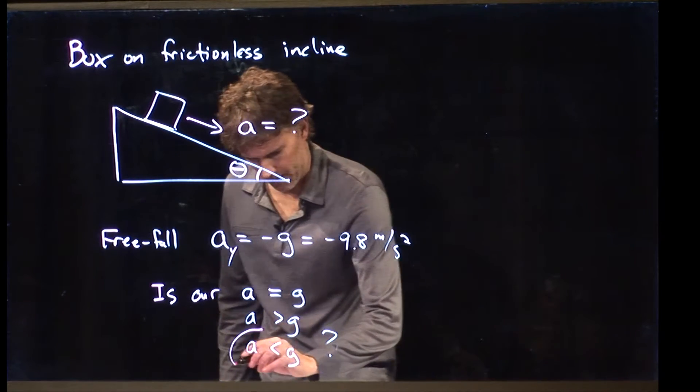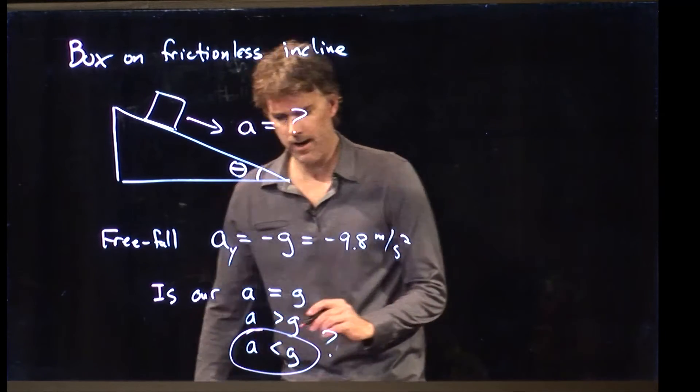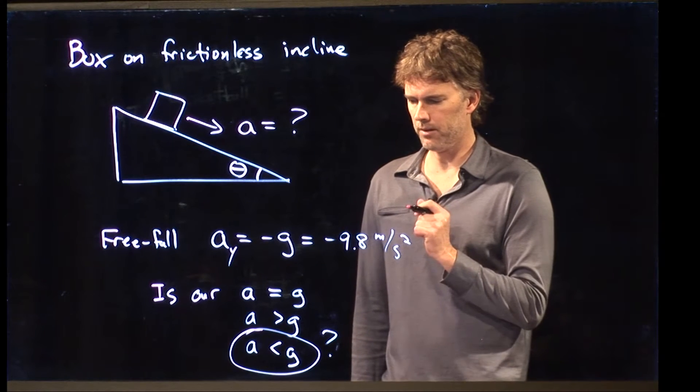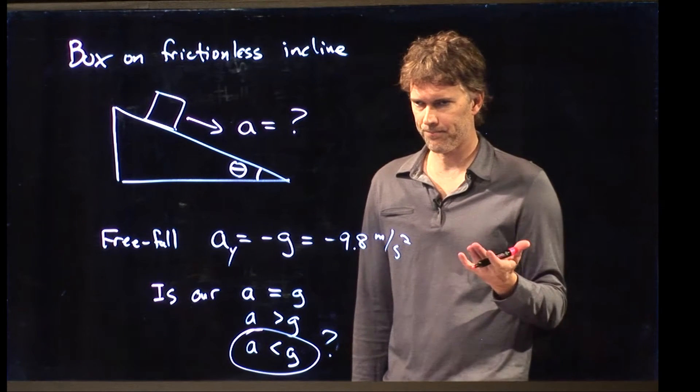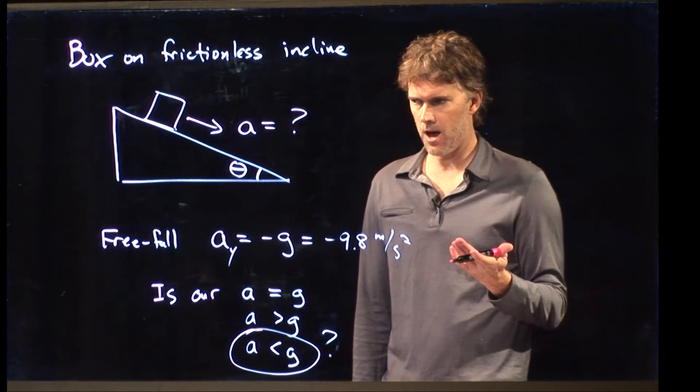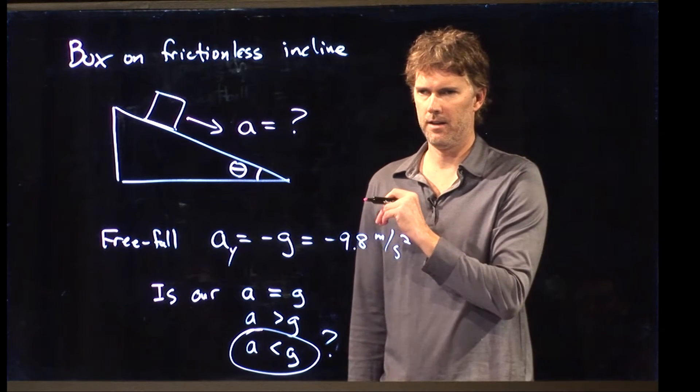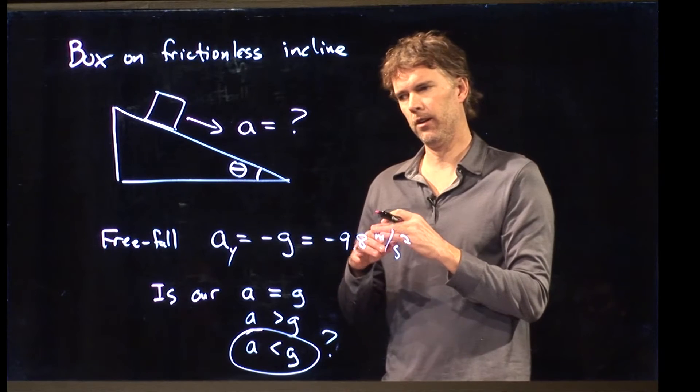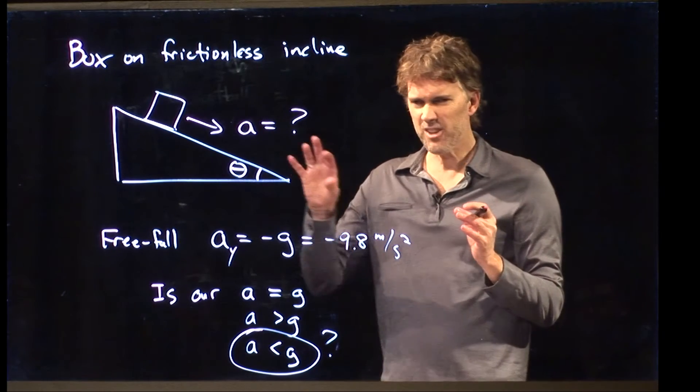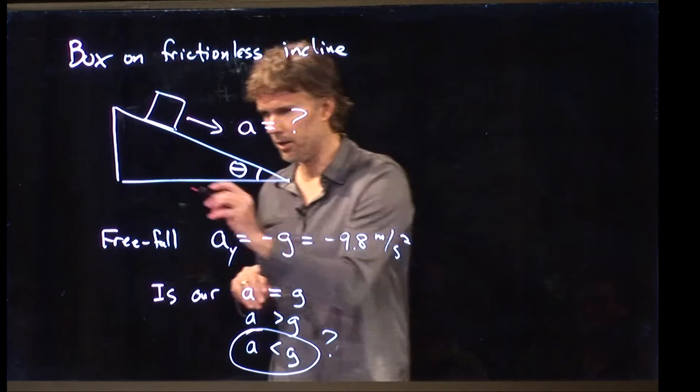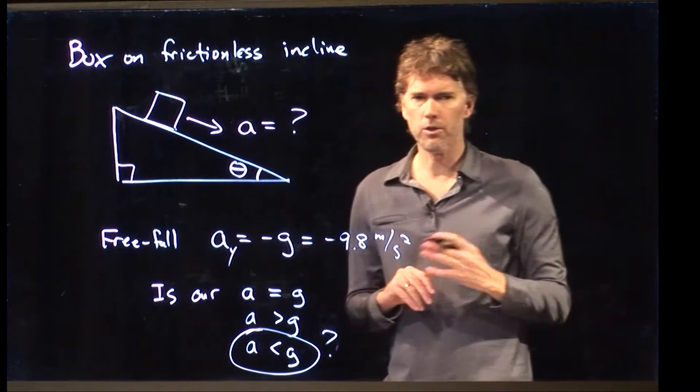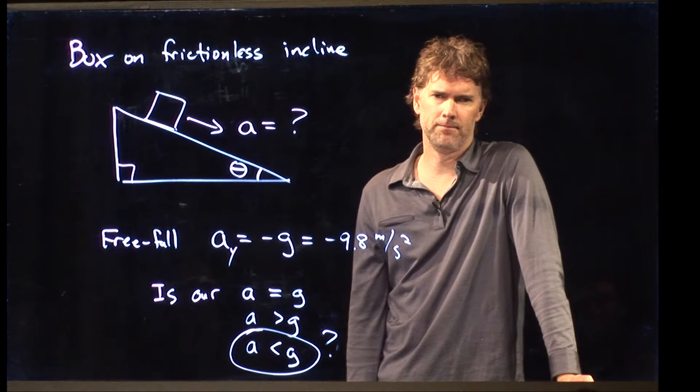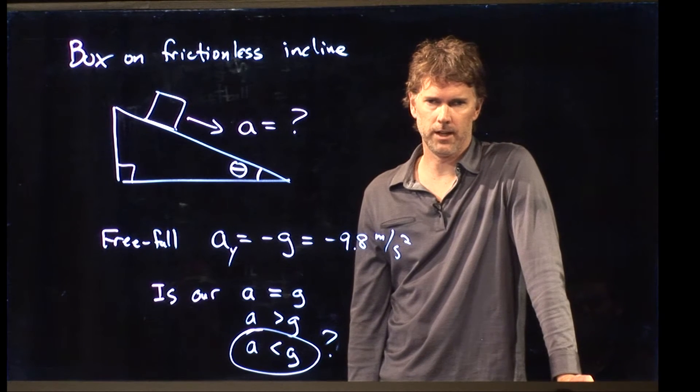So we're going to guess that it's got to be this. So I need to multiply g by something that is smaller than 1. Now, whenever you see a theta, what do you think about in terms of other functions? Whenever you see a triangle like this, particularly a right triangle, what do you think about when you see theta? Yeah. Sine, cosine, and tangent.